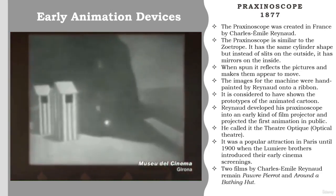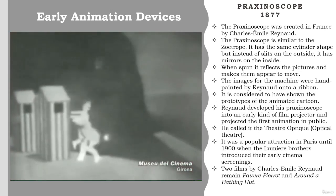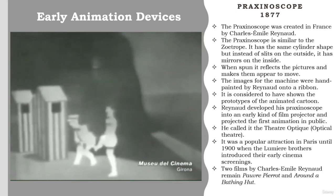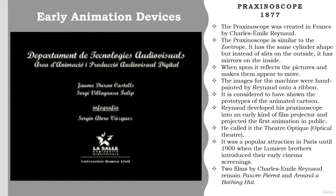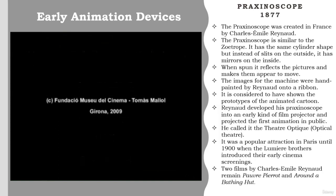With cinema opening its doors to the people, the Praxinoscope became a toy without a future. Reynaud was no longer able to support himself. In a fit of rage, he smashed all of his machines, then day after day threw his painstakingly painted films into the River Seine. He died in poverty and solitude a few years later. Two films by Charles-Emile Reynaud remain: Pauvre Pierrot and Around a Bathing Hut — true little comedies performed by drawn actors, with impressive movement even for the modern-day viewer. As Norman McLaren remarked 50 years later: animation is not the art of drawing that moves, but the art of movement which is drawn. Reynaud's drawing becomes beautiful when it moves.